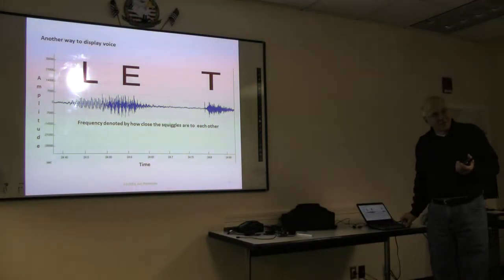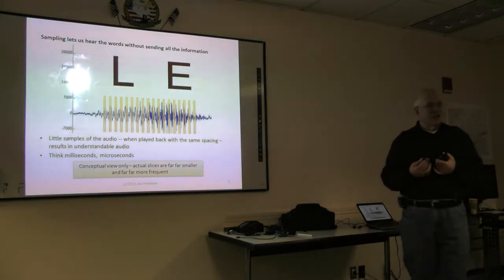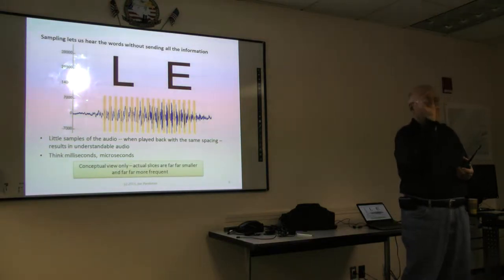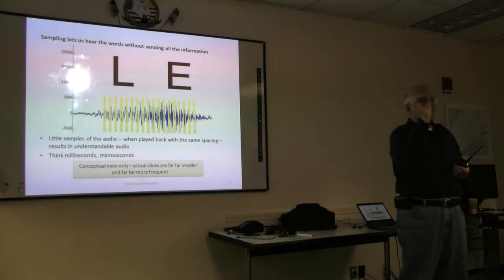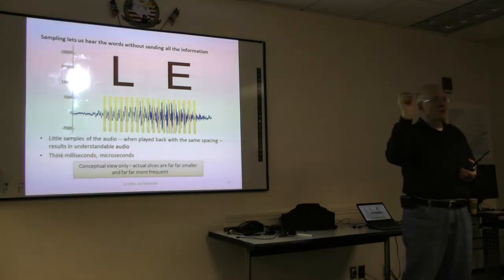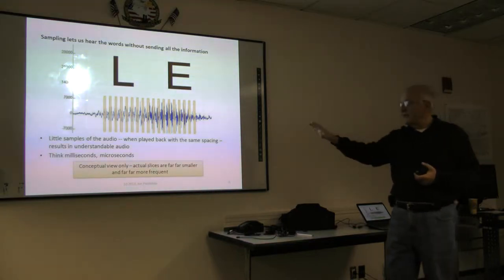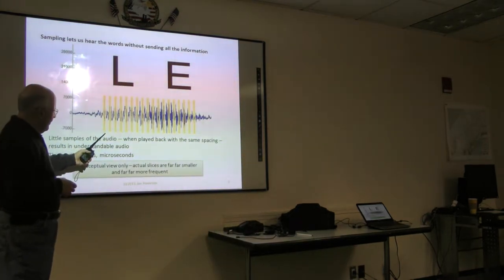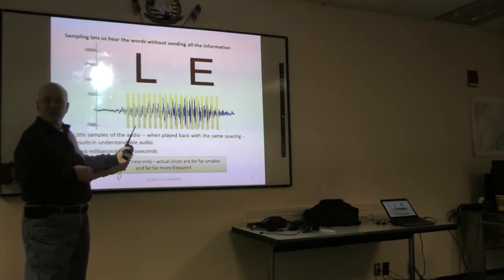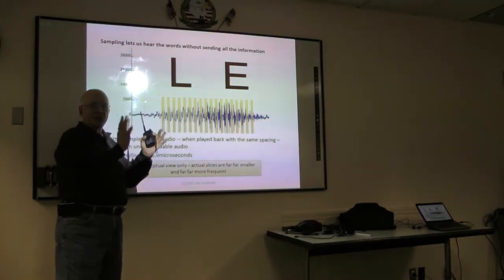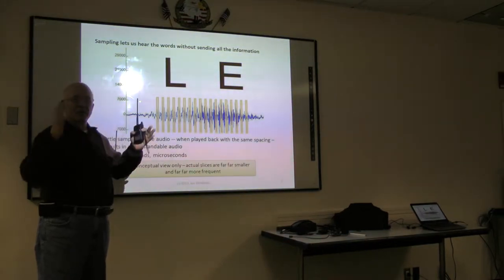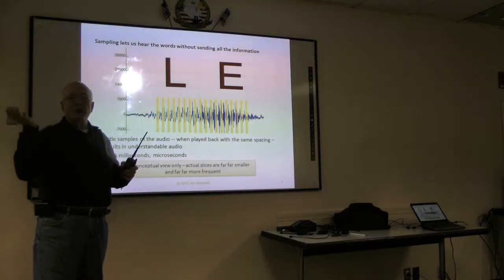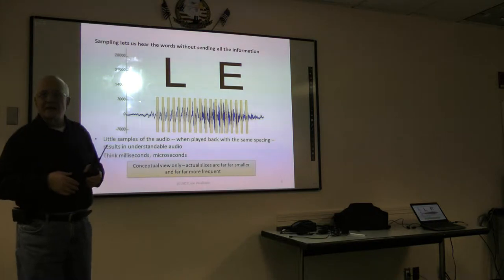So how do we turn that into zeros and ones? At least 60 years ago, Bell Labs discovered that you can sample voice — take little pieces of speech and send just those pieces, and at the other end people will still be able to understand what's being said. If every couple of milliseconds we take a millisecond sample of the voice, we can send just that down the line, and at the other end people will hear the voice and most people won't hear any difference.